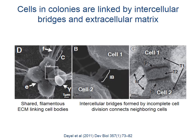A closer look at the choanoflagellate multicellular colony reveals that cells within the rosette are attached to one another with extracellular matrix, filopodia, and intercellular bridges that form due to incomplete cytokinesis during colony development.